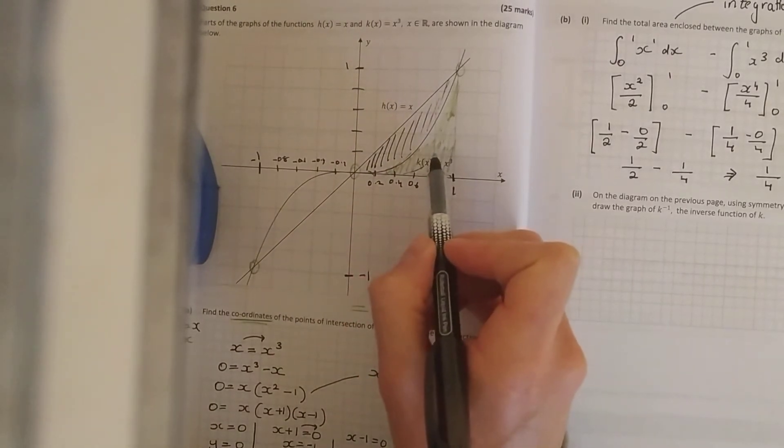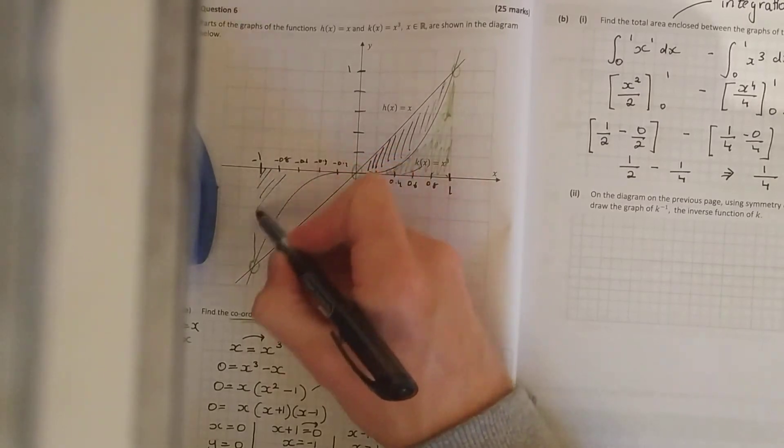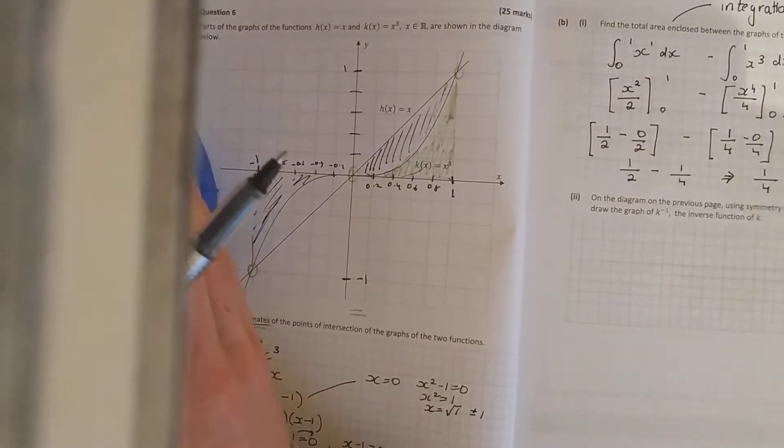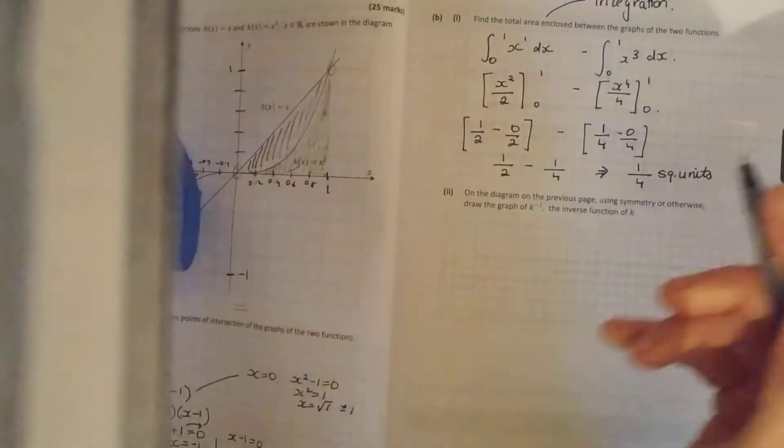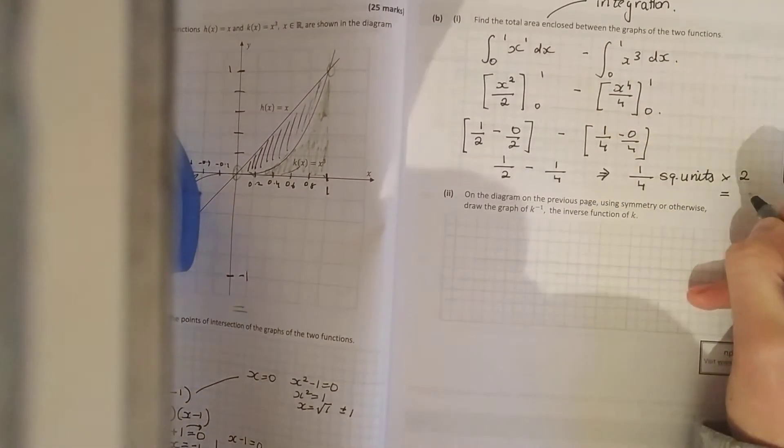You've also got to work out the other side, and it's completely symmetrical. So the area of this bit here is a quarter, the area here also will be a quarter as well. So let's double that up. Two times quarter is a half.